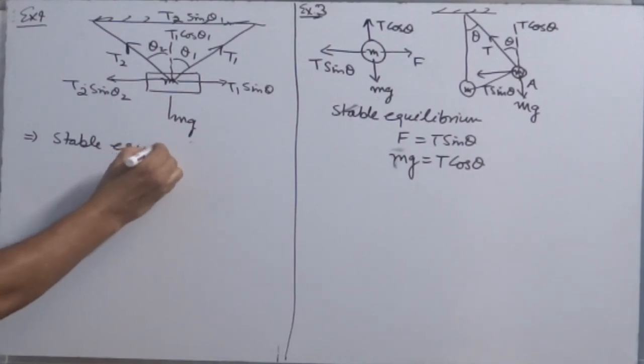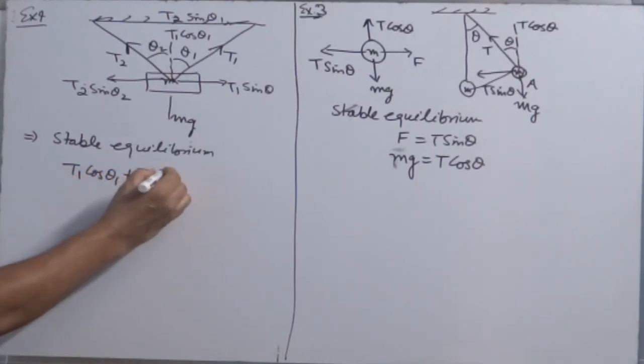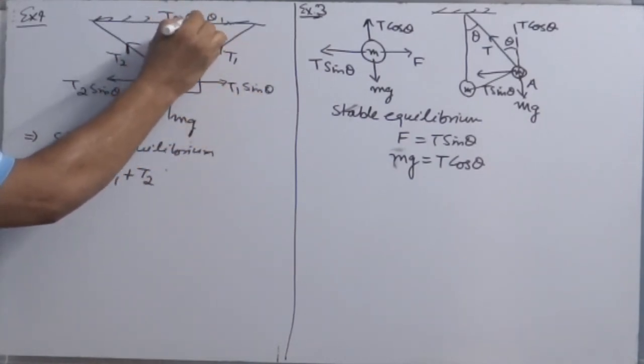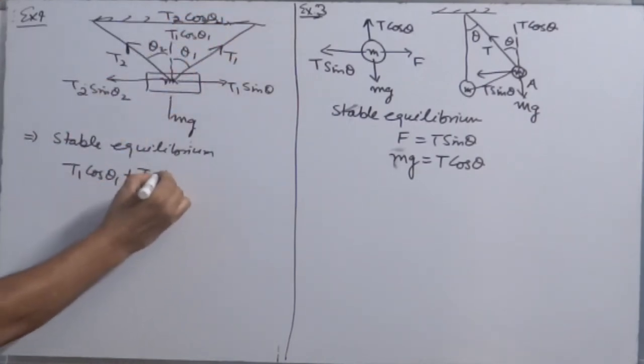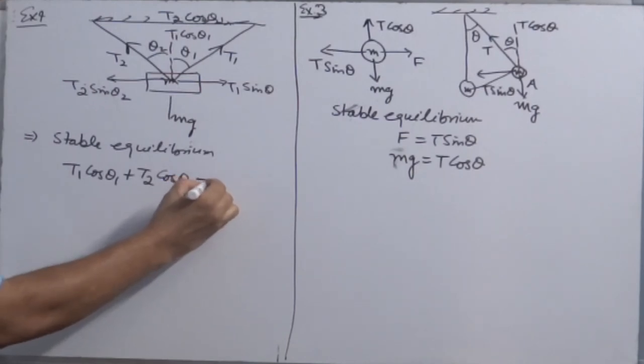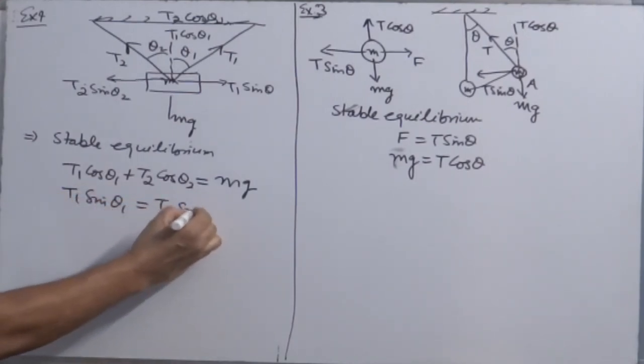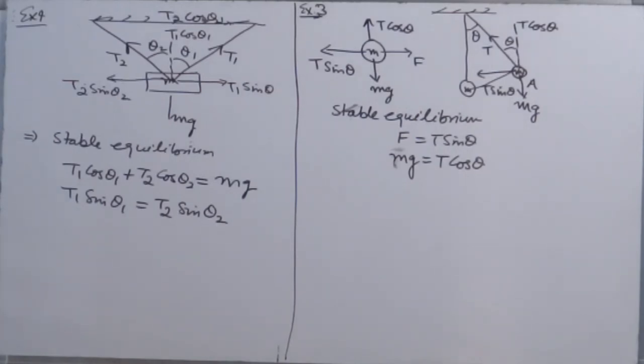T1 cos theta 1 plus T2 cos theta 2 will be equal to Mg. And T1 sin theta 1 must be equal to T2 sin theta 2. That's how you will form algebraic equations by using resolution of vectors, and then solve algebraic equations to get the answer.